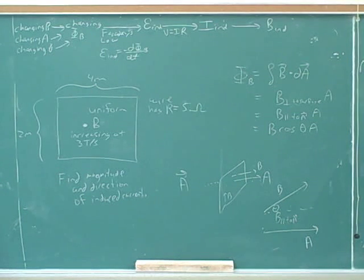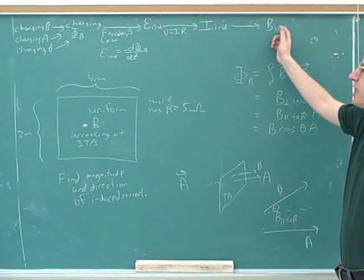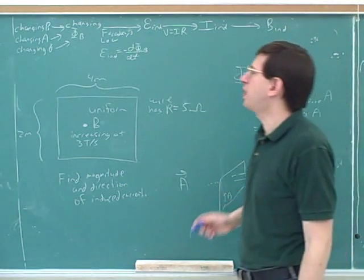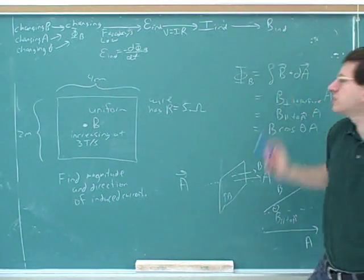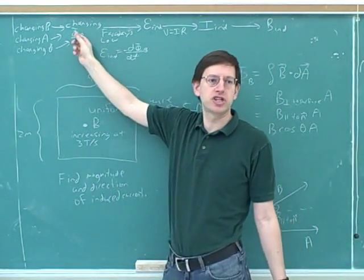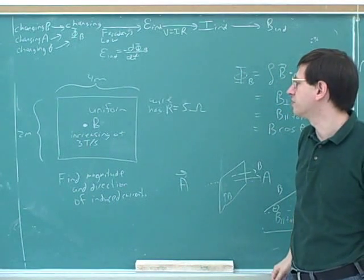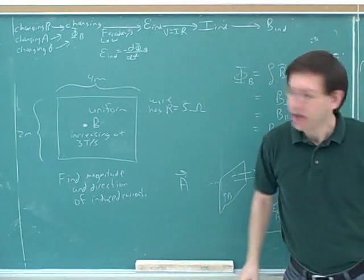For that we use Lenz's law, which you might have heard mentioned in class. The basic idea here is that the induced magnetic field tries to oppose the change in the magnetic flux. The magnetic field that we're inducing is going to try to oppose this change over here, and we can use that to figure out what the directions are going to be.